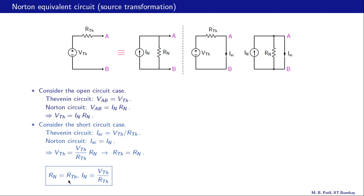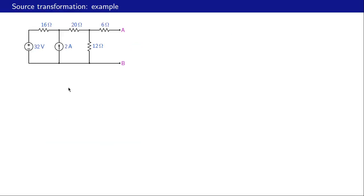To summarize: r-n and r-th are equal, and i-n equals v-th divided by r-th. We can go from the Thevenin circuit to the Norton circuit using these formulas. Similarly, we can go from the Norton circuit to the Thevenin circuit, since r-th equals r-n and v-th equals i-n times r-n. This source transformation will be very useful in circuit analysis.